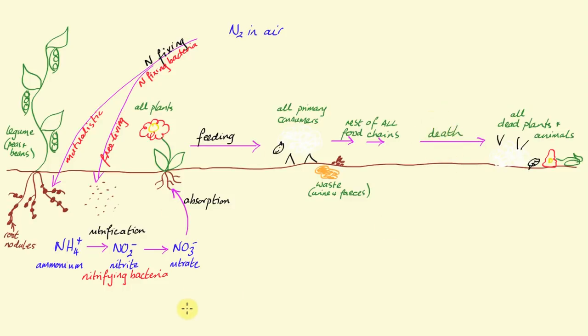And as a result of decay of both waste and dead plants and animals, ammonification of the nitrogen containing compounds in those bodies and in the waste by saprobionts occurs, turning those nitrogen compounds back into ammonium.